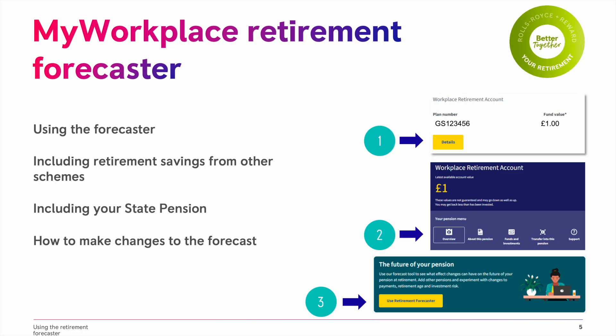My Workplace's retirement forecaster takes into account what you've already saved and makes a forecast based on this, plus your current contribution rate and estimated future investment growth. However, it won't know about other pensions or retirement savings that you have, including any other entitlements from your employment with Rolls-Royce. It will show you how to add them in, as well as the state pension, so you can get a complete picture.